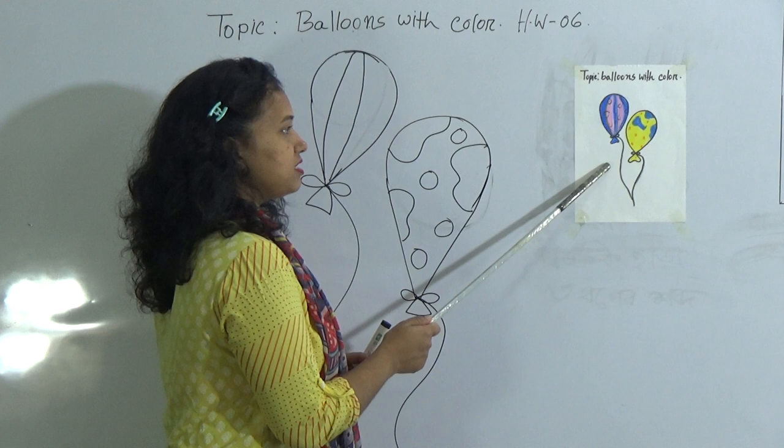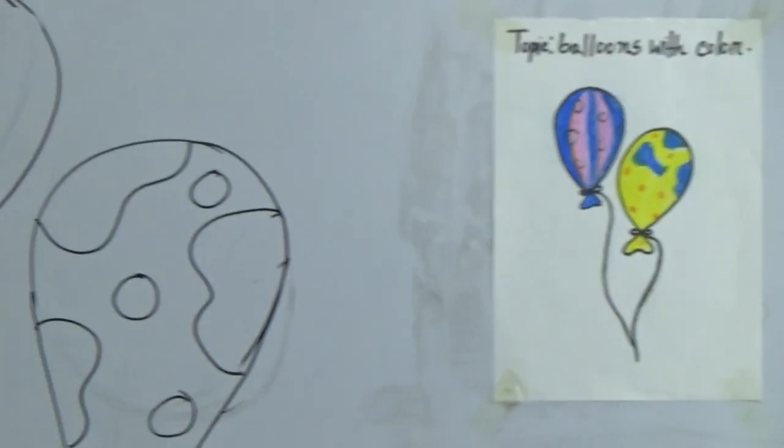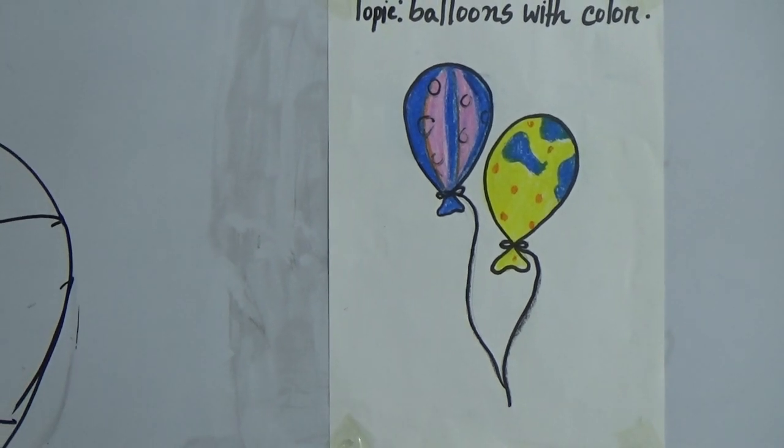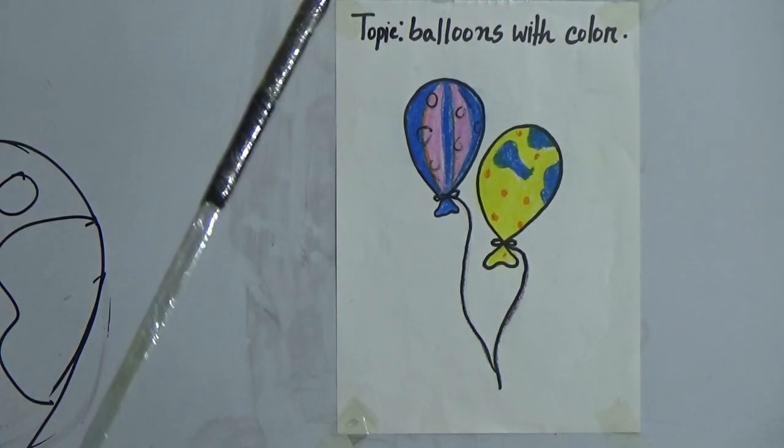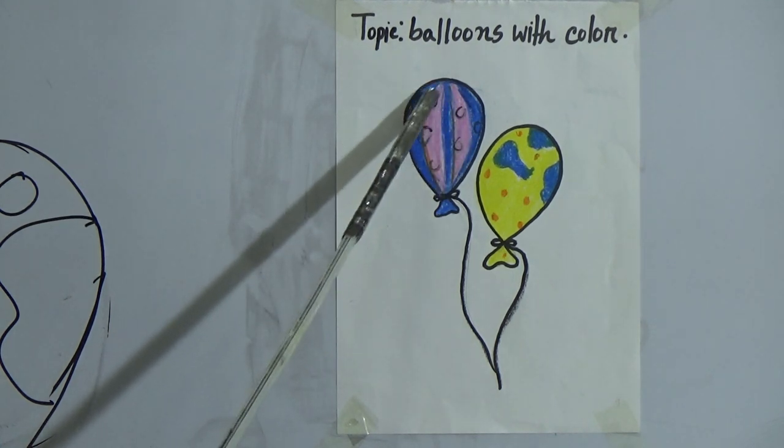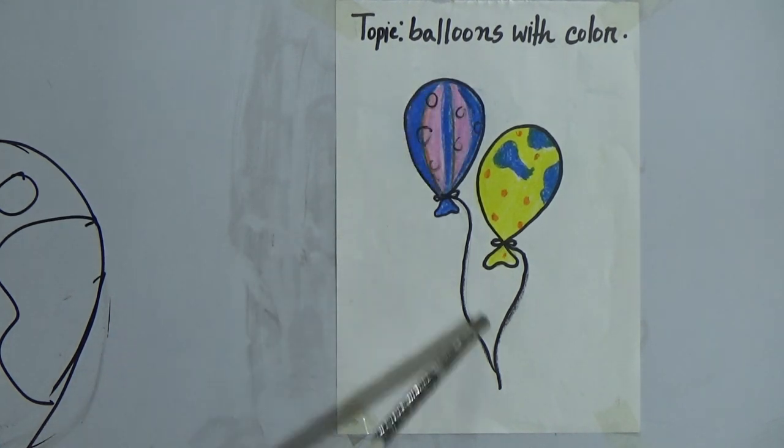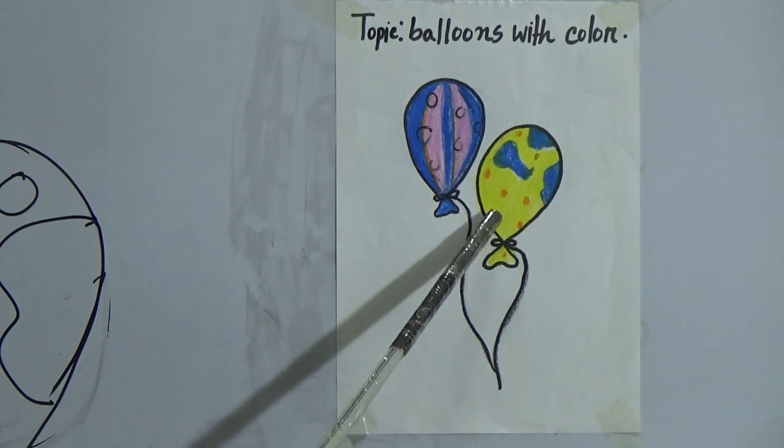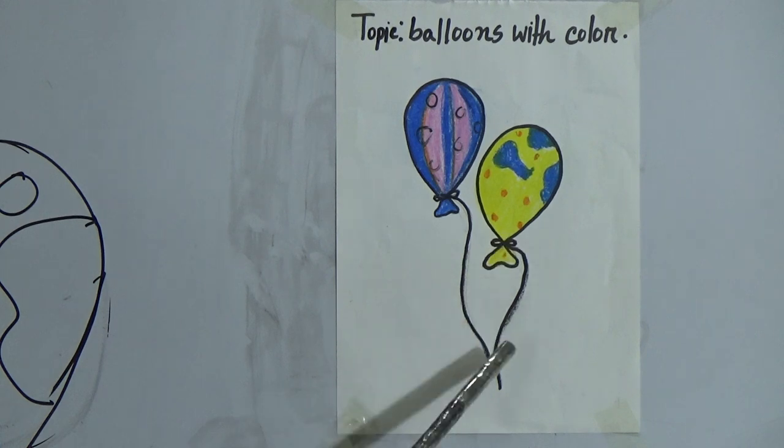Look at the board. I have already colored two balloons for you. Here mentions balloons, that means multiple balloons. If you want, you can draw many more balloons. Here I have used two colors: pink and blue, and gave some circles. And here I have used yellow, blue, and orange circles. You can also use these types of colors or your own choice of colors.